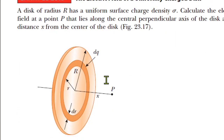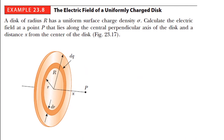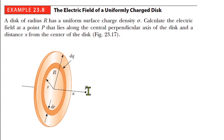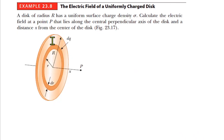Now the mother of all problems: here's a disk with charge density σ, and we have to calculate the strength of the electric field at point P, located x units away from the center along the axis. We'll take a tiny little ring and compute the charge on it.